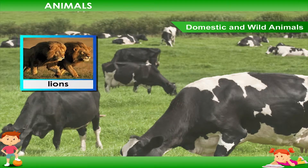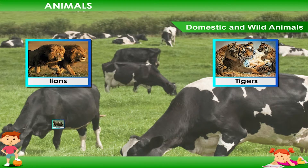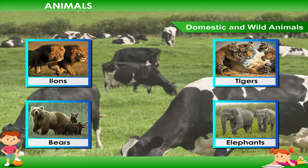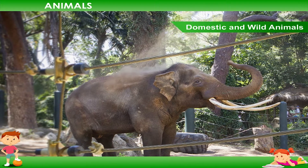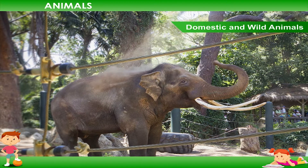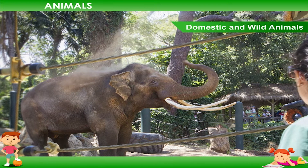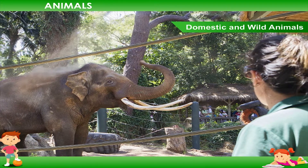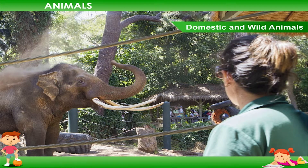Animals such as lions, tigers, bears, elephants etc. that live in the forests are known as wild animals. We can see that some of these wild animals are also kept in the zoo. We cannot keep them with us as they may be dangerous. They roam around freely in the forests.